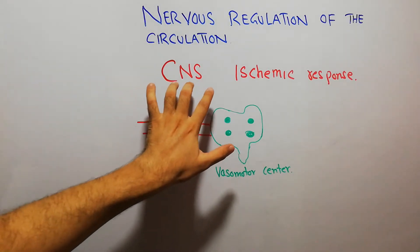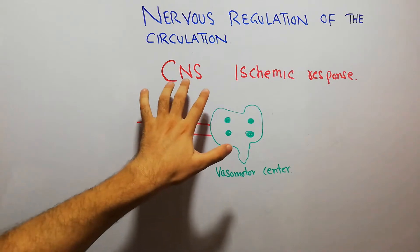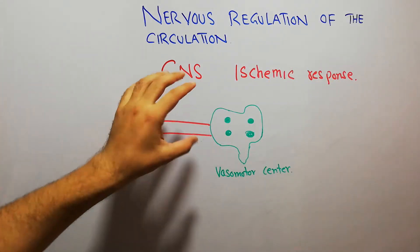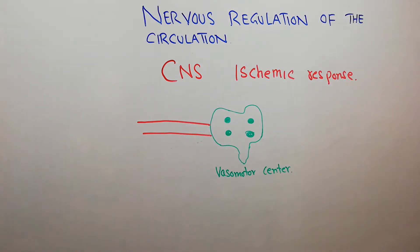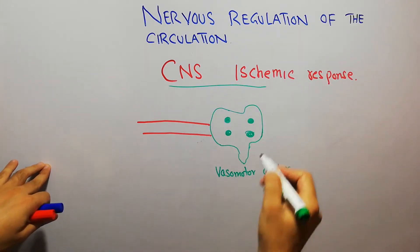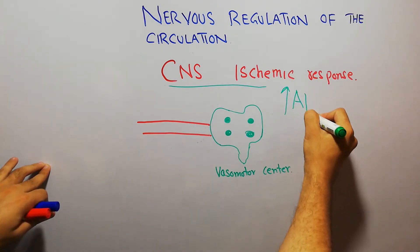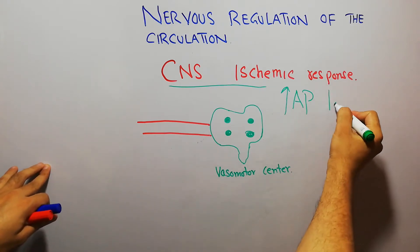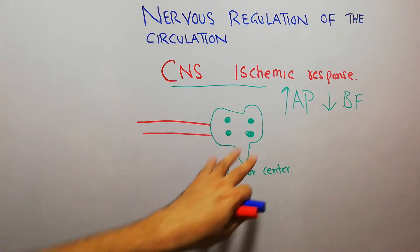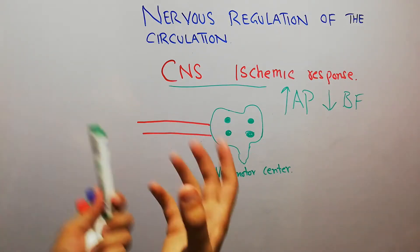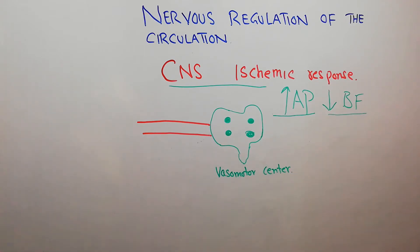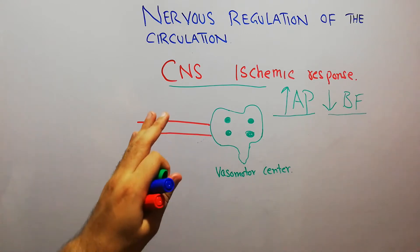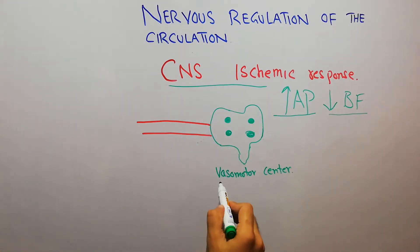The topic of today's discussion is the CNS ischemic response, or central nervous system ischemic response — what happens when the brain is receiving less blood or no blood at all. The CNS ischemic response simply means an increase in arterial pressure due to decreased blood flow to the central nervous system or the vasomotor center, which is the most important part of the brain regulating this response.